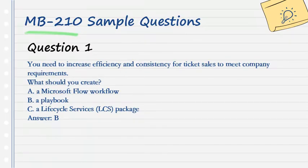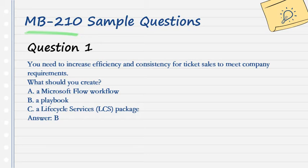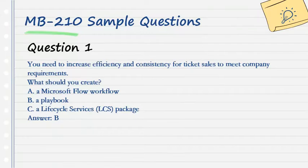Question 1. You need to increase efficiency and consistency for ticket sales to meet company requirements. What should you create? A. A Microsoft Flow workflow. B. A Playbook. C. A Lifecycle Services (LCS) Package. Answer: B.